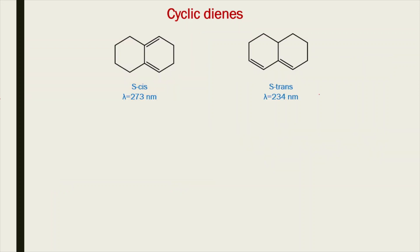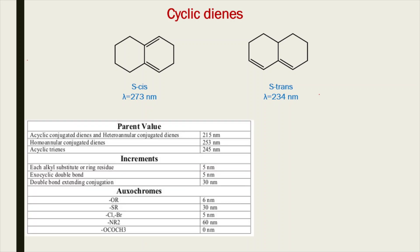For cyclic dienes, the lambda max values are different for different isomers. According to the Woodward-Fieser rule, to calculate the lambda max values, we need to go step by step. First, we need to have the parent value, then we add some increments and also the values of auxochromes. Before going to the actual calculations, let us first understand some terms: acyclic dienes, homoannular conjugated dienes, heteroannular conjugated dienes, increments, alkyl substituents, ring residues, and exocyclic double bonds.